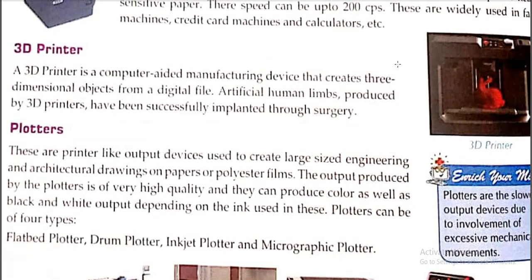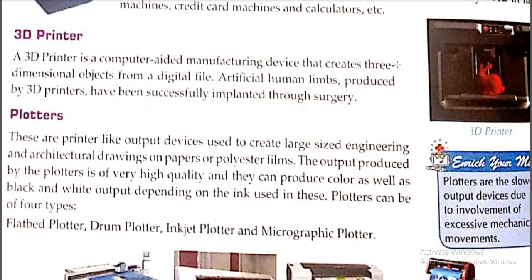3D printers are used for printing real objects. For example, if you want to print a spoon, the 3D printer makes the real shape of it with height, width, and length. It is used to print three-dimensional objects — artificial human limbs can be produced by 3D printers. It is used as a computer-aided manufacturing device that creates three-dimensional objects from a digital file. Engineering students use them to print 3D project models. It can print real objects like cups, spoons, toys, etc.